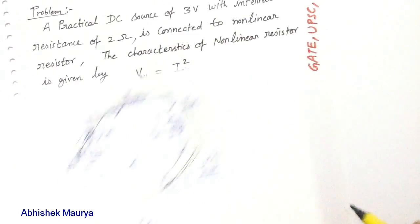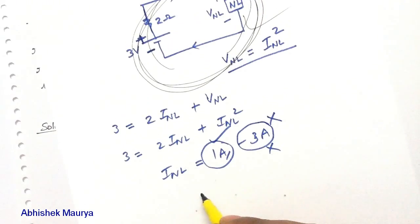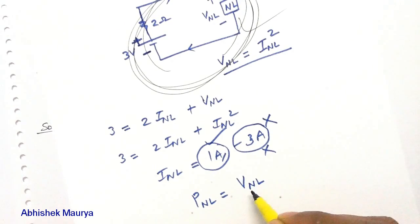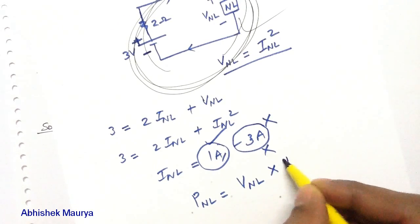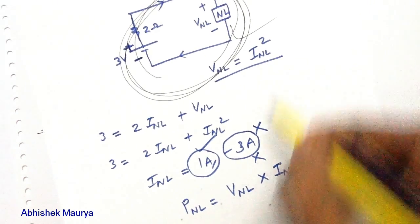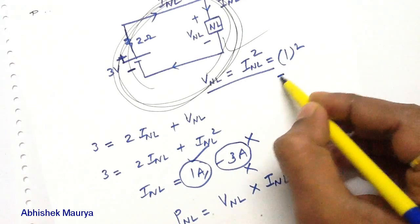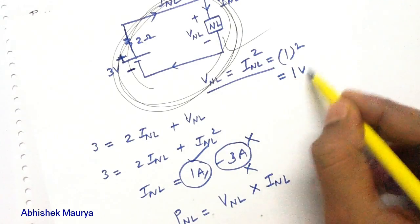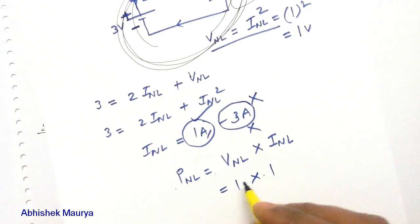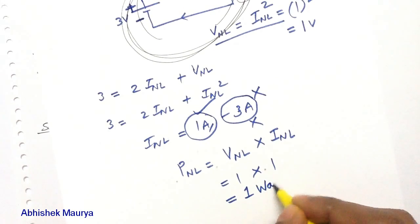We have to calculate the power dissipation in the non-linear resistor. Power dissipation equals the voltage drop across the non-linear resistor multiplied by the current through it. Putting I_NL equals 1 A, the voltage drop V_NL equals 1 V, and the current is 1 A, so the power dissipation is 1 W.